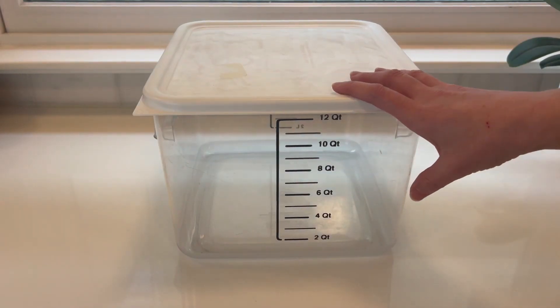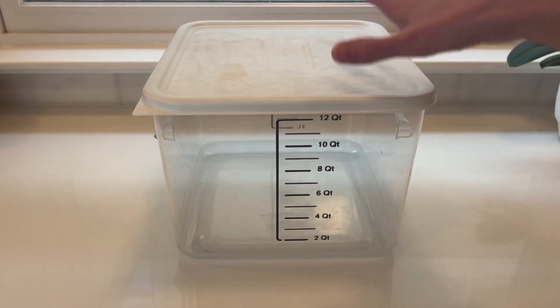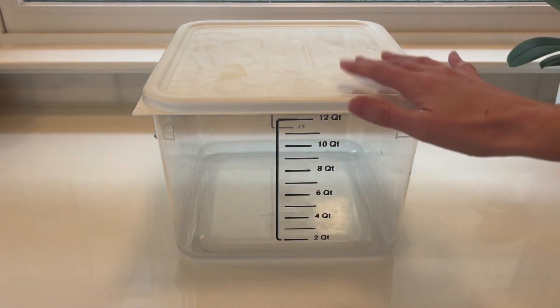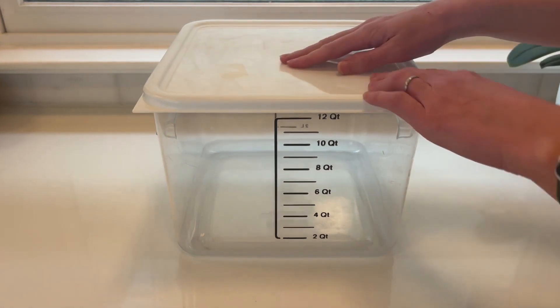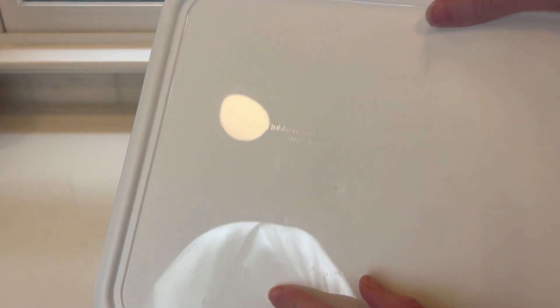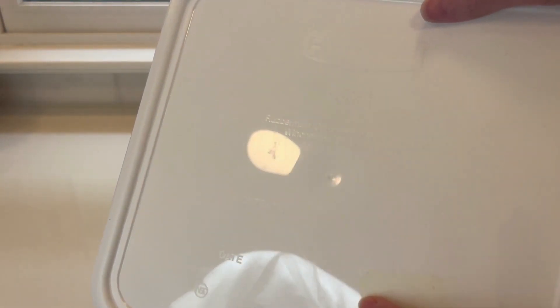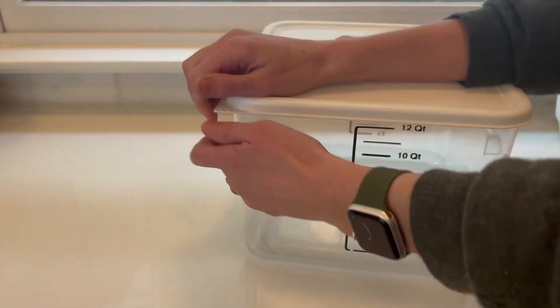Sometimes you just need a food-grade airtight container, and this Rubbermaid does not disappoint. It has a solid top that actually says contents and date if you want to write on it with a dry erase marker. Pull off the top—very tight seal.